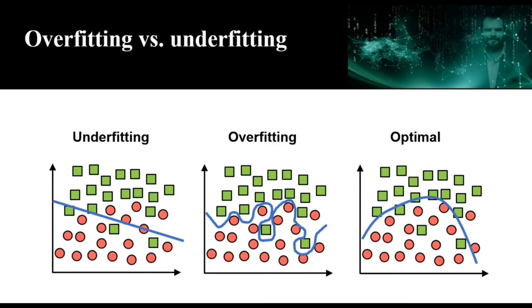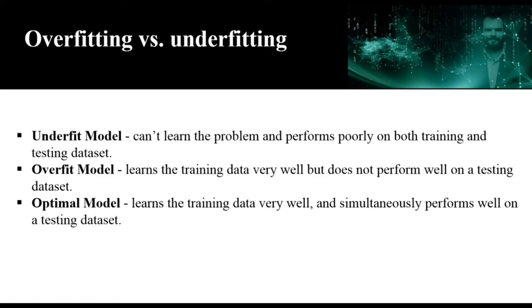So based on performance on both training and testing data we classify our model into three categories. We have underfit model and this model can't learn the problem and performs poorly on both training and testing data set. We have overfit model and this model learns the training data set extremely well but does not perform well on a testing data set. And we of course have optimal model and this model learns the training data set very well and also performs well on the testing data set. So we learned what overfitting is and now the question that we need to ask is how can we avoid this problem.